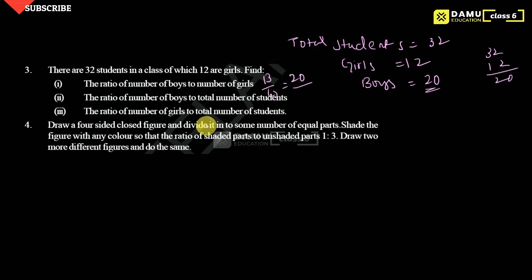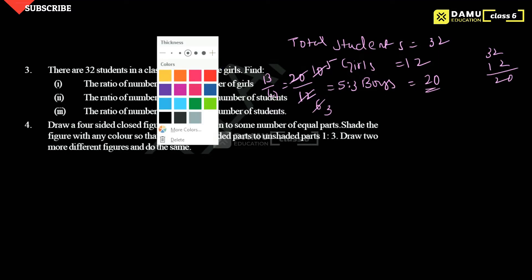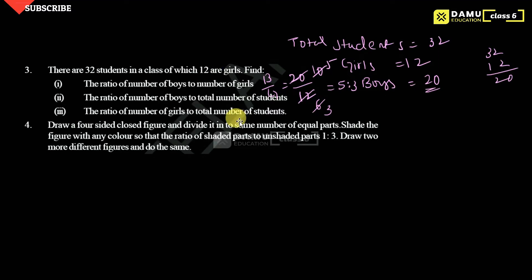Ratio of boys to girls — B by G — boys are 20 and girls are 12. So 20 by 12: two 6s are 12, two 10s are 20, then two 3s are 6, two 5s are 10. So the answer is 5:3.